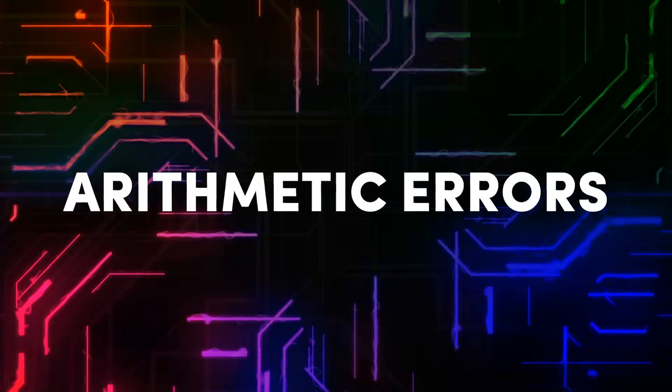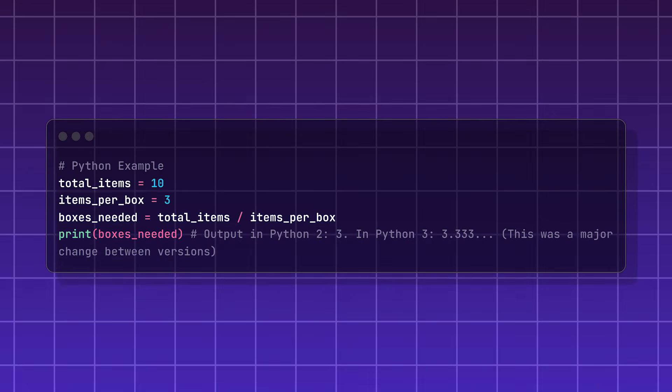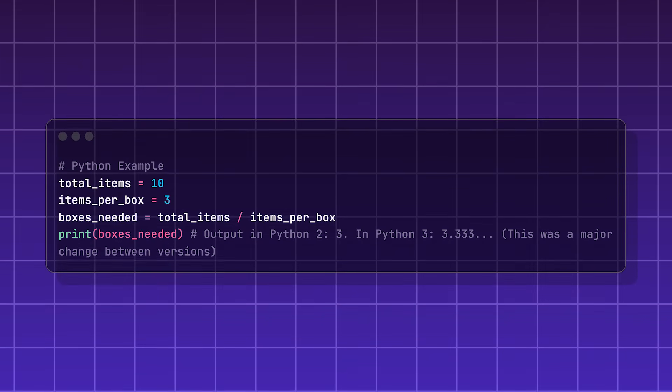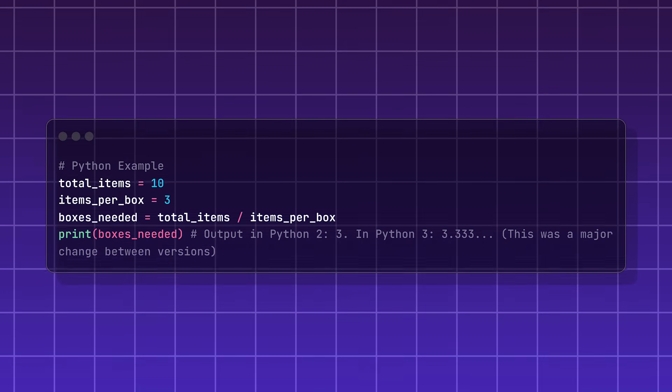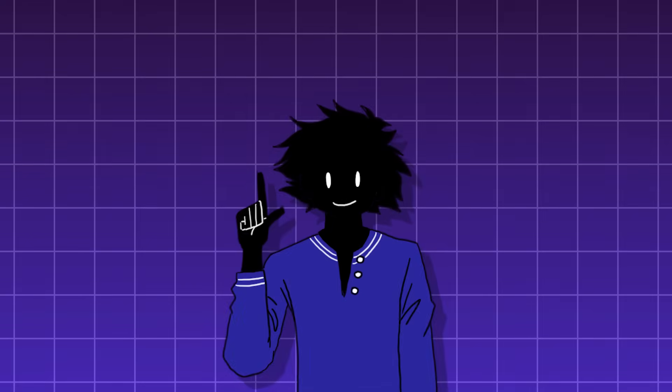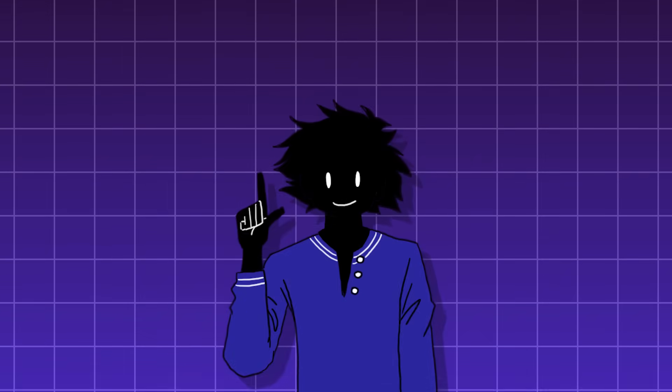Arithmetic errors — a type of error where the program runs successfully but has a bug due to a math error in the code. Just like runtime errors, there are different types.